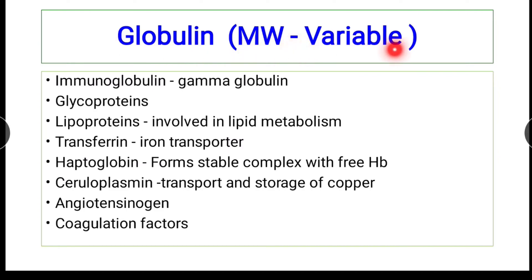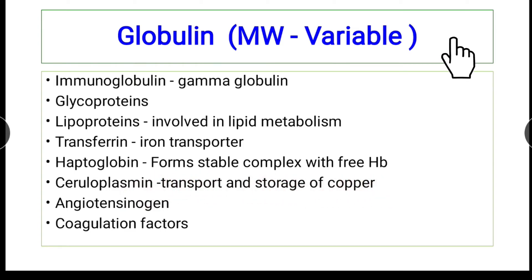Globulin has variable molecular weight. Gamma globulins are immunoglobulins. Glycoproteins are proteins plus carbohydrates. Lipoproteins are involved in lipid metabolism. Transferrin transfers iron. Haptoglobin forms a stable complex with free hemoglobin. Ceruloplasmin is involved in the transportation and storage of copper. In a previous video, Wilson's disease was mentioned — that is due to reduced ceruloplasmin level in the blood.